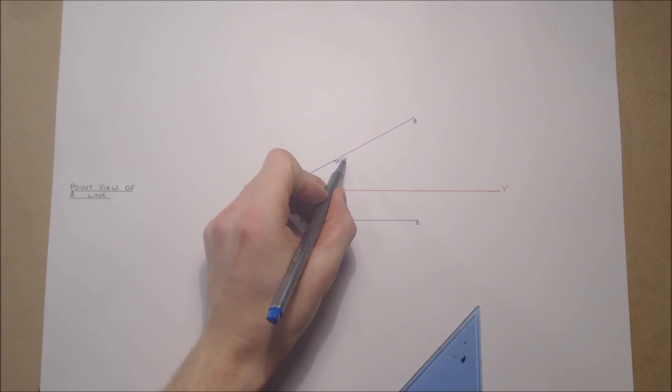Here we see the line AB is parallel to projection plane XY in Plan, therefore our elevation is a true length.